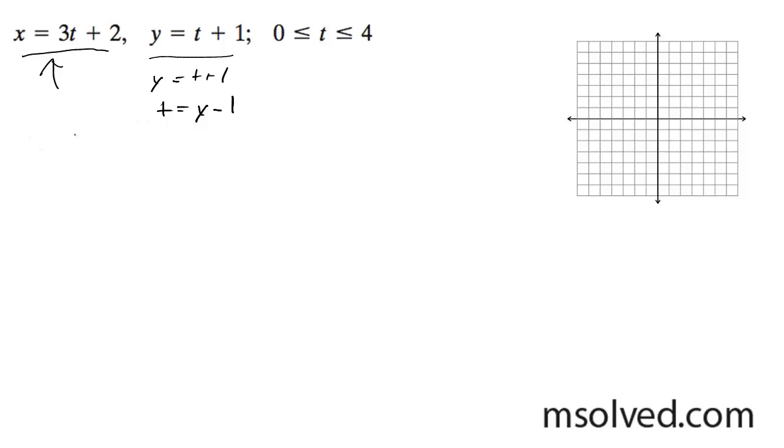Now we can substitute this into this equation here. So we get x is equal to 3 times y minus 1 plus 2. x is equal to 3y minus 3 plus 2.